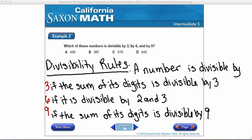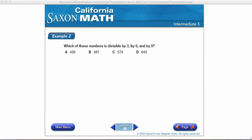Let's take a look at a couple of numbers. First, we want to know which of these numbers is divisible by 3, by 6, and by 9. So let's start with A, 456. I want to know if it's divisible by 3, if it's divisible by 6, and if it's divisible by 9. So I have to run all three tests.